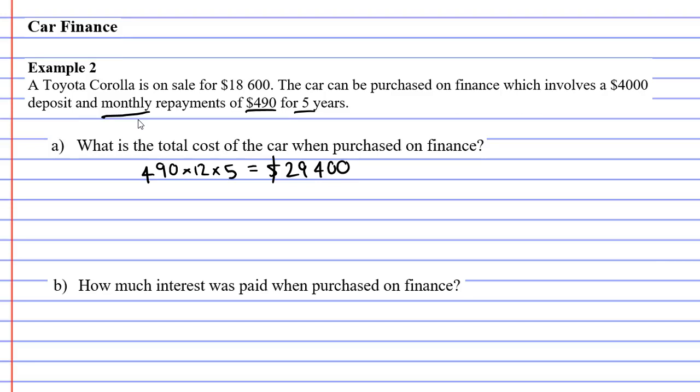So after five years has finished, that's how much money I've paid out. Okay, now we've also got to remember, you're not just paying the monthly repayments, but you had to pay a $4,000 deposit as well. So we need to add that on top. What do we get? And that comes out to $33,400.